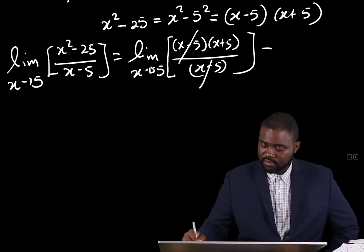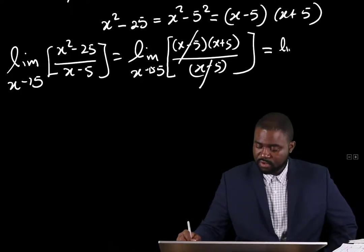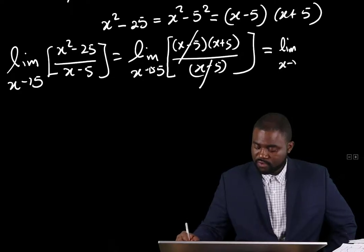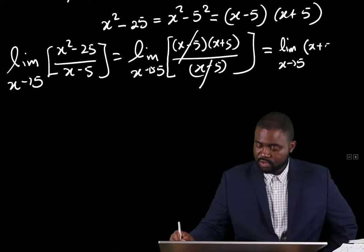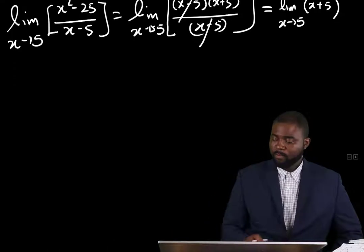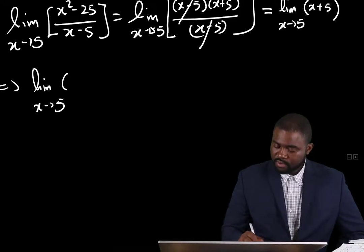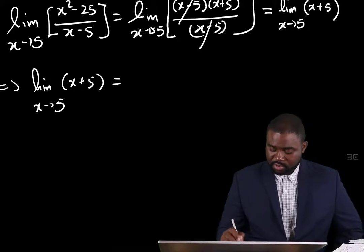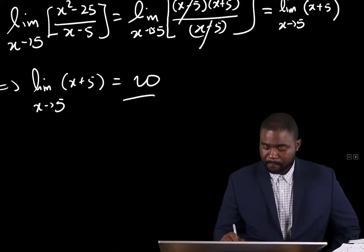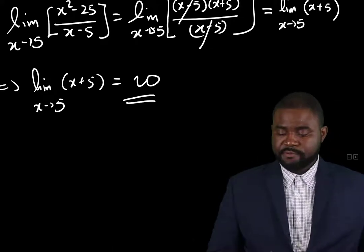The x minus 5 terms cancel, and we are left with the limit as x approaches 5 of x plus 5. This means the limit equals 5 plus 5, which is equal to 10. This gives us a brief introduction of limits. In the next lesson, we will look at differentiation.